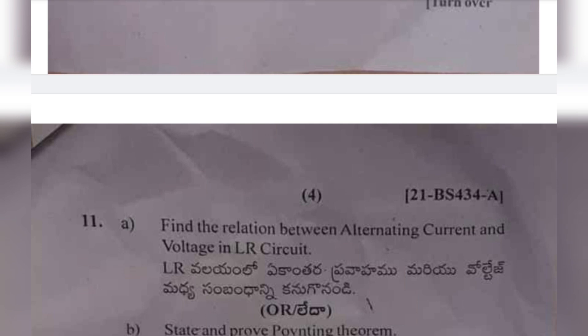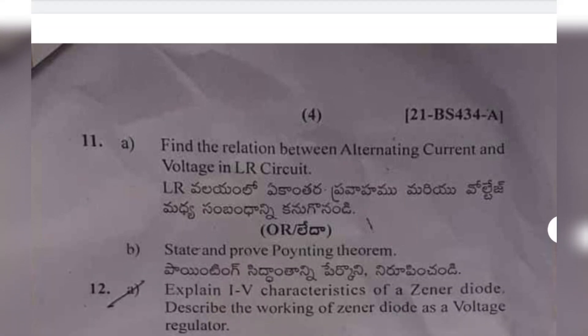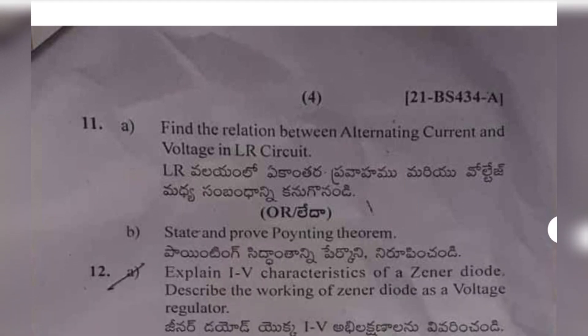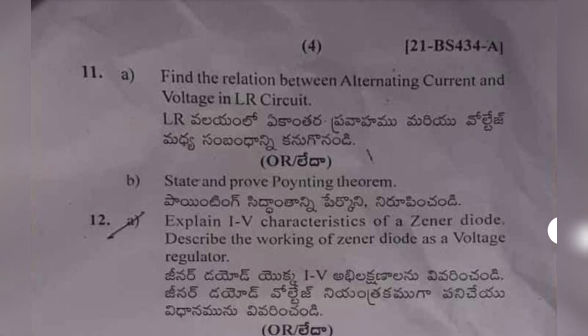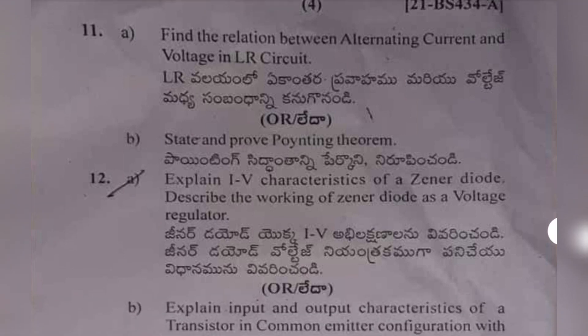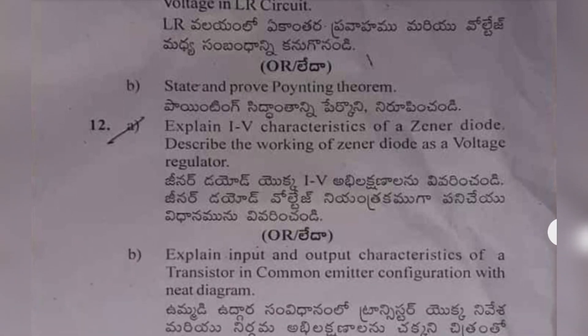Eleventh (a): find the relation between alternating current and voltage in an LR circuit. Eleventh (b): state and prove Poynting's theorem. Twelfth (a): explain the I-V characteristics of a Zener diode and describe the working of a Zener diode as a voltage regulator.